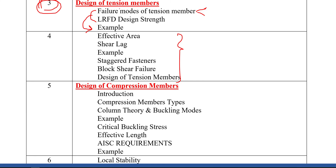In week four, we continue with tension members. We'll cover the effective area and the definition of shear lag, which occurs when designing an asymmetric tension member. Then we'll look at staggered fasteners and check geometry for different staggered schemes, followed by block shear failure — an important failure mode for tension members — and finally the design steps for tension members. By week four, we conclude everything related to tension members.